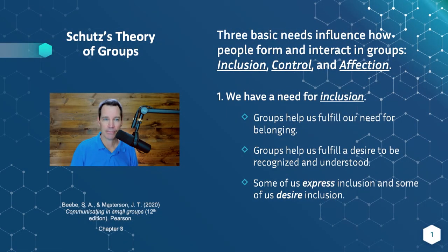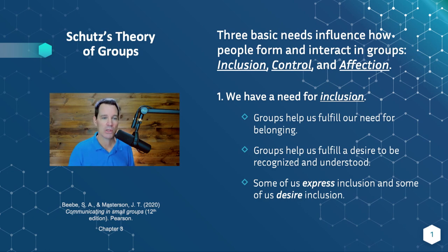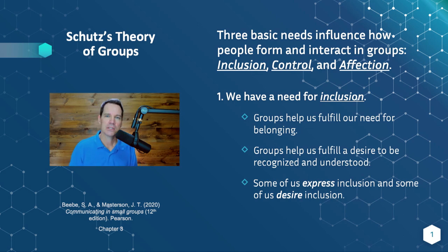There are three basic needs that influence how people form and interact in groups: inclusion, control, and affection. Let's unpack each of these. We all have a need for inclusion, and groups can help us to some extent fulfill that need to belong. Groups help us fulfill a desire to be recognized and understood by other people. Some of us express inclusion and some of us merely desire it but aren't really quick to express it.